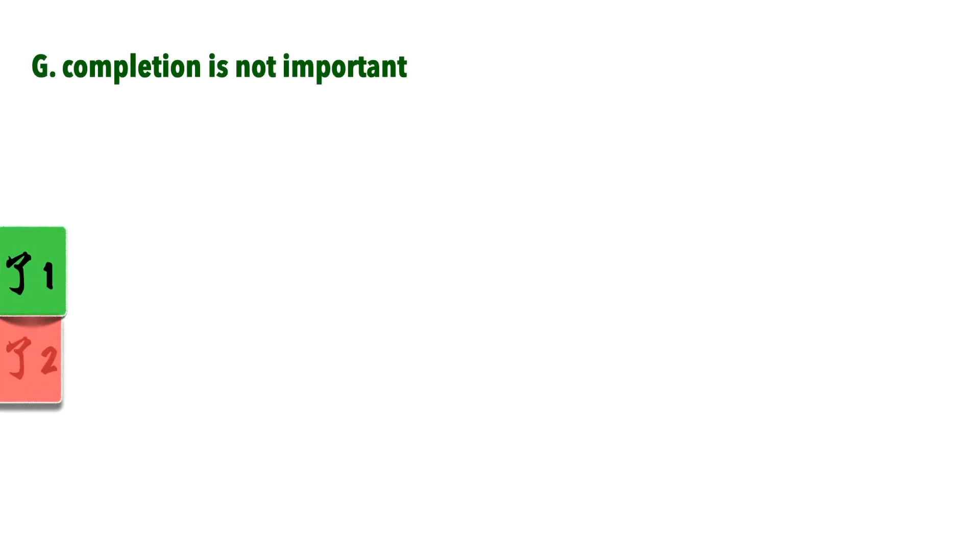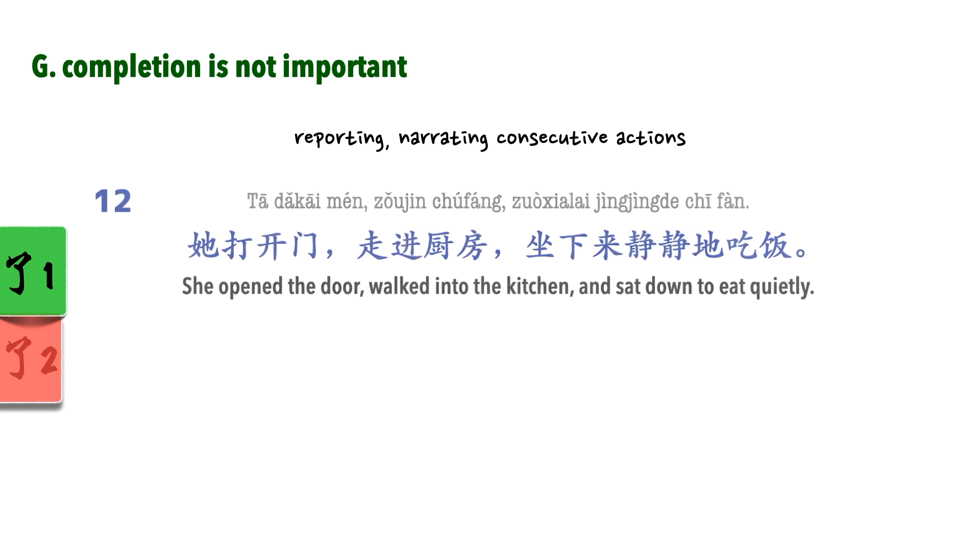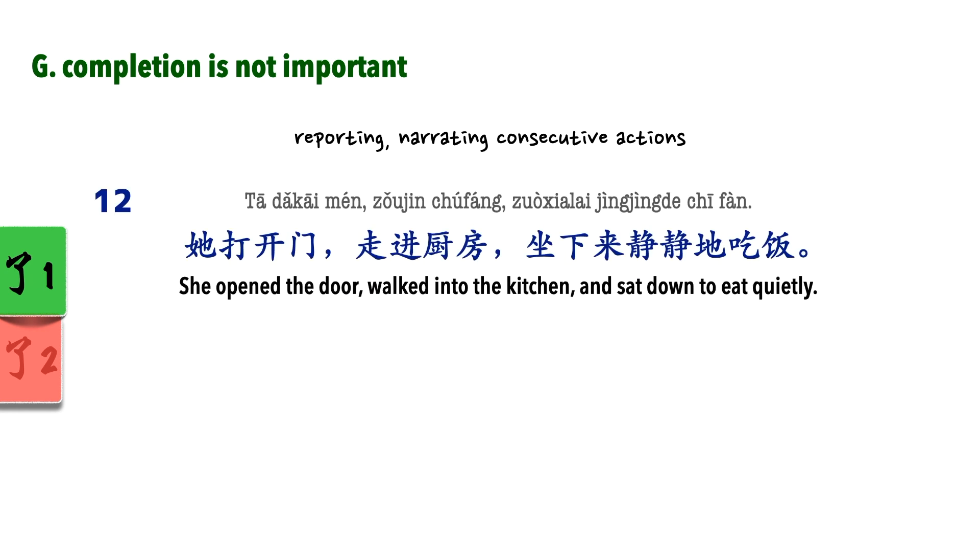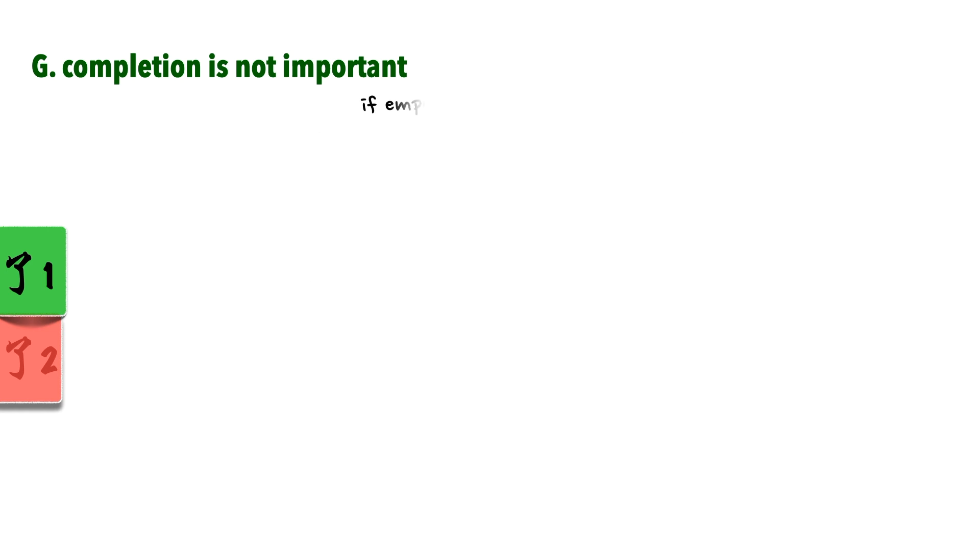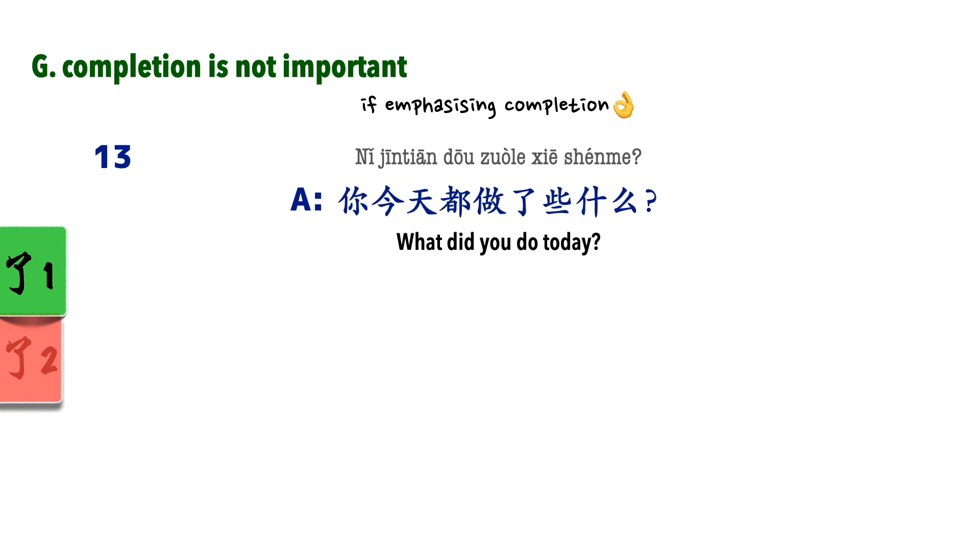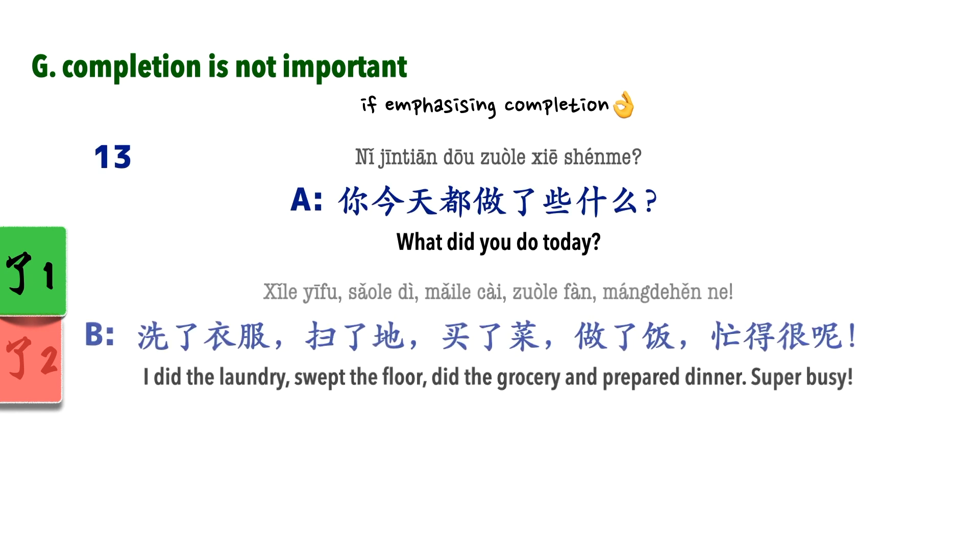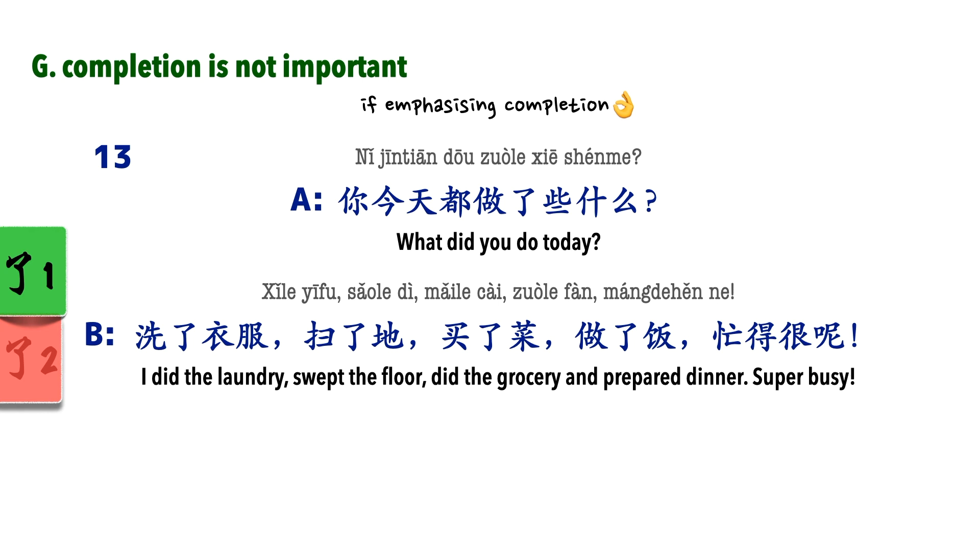When completion is of no importance. Even if the action has been completed, we don't usually use 勒1 if completion is of no importance. This type of sentence is typically seen in reporting or narrating, especially consecutive actions. 他打开门,走进厨房,坐下来,静静地吃饭. On the other hand, if you want to emphasize completion, you can use 勒1 repeatedly. 你今天都做了些什么? 洗了衣服,撒了地,买了菜,做了饭,忙得很啊.